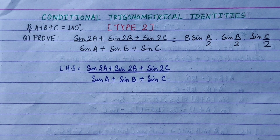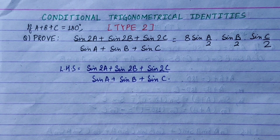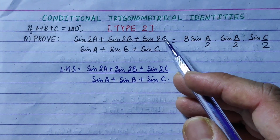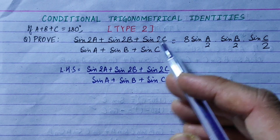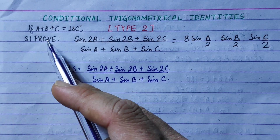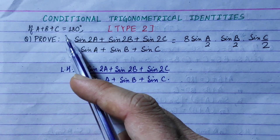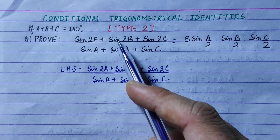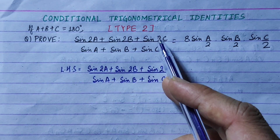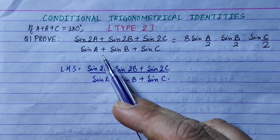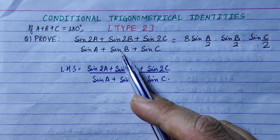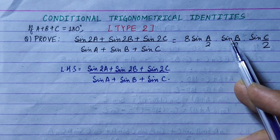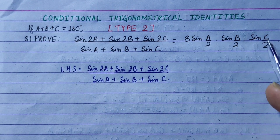Hi everyone. In conditional trigonometry identities, the second type of question: if a plus b plus c equals 180 degrees, prove that (sin2a + sin2b + sin2c) / (sinA + sinB + sinC) is equal to 8·sin(a/2)·sin(b/2)·sin(c/2).